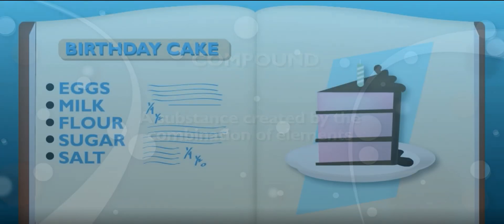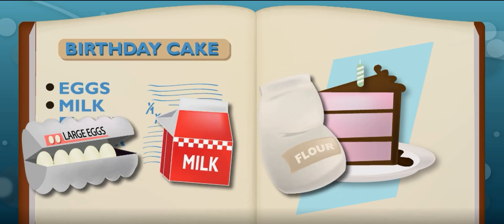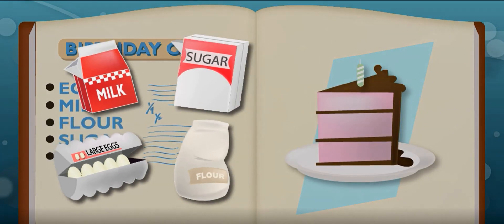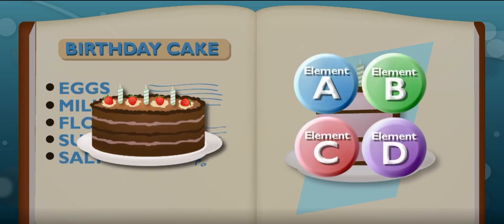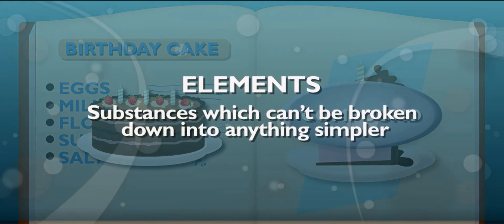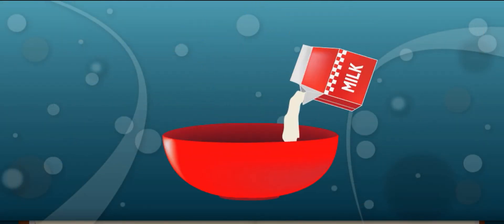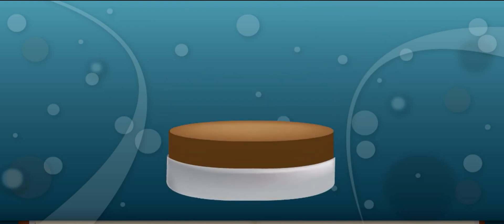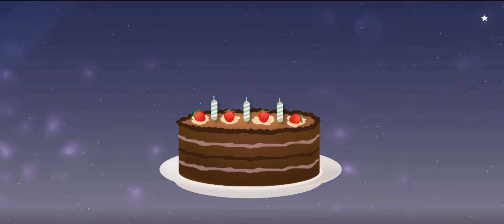That brand new substance is called a compound. It's sort of like this cake — a yummy and delicious treat made of eggs, milk, flour, and sugar. The ingredients we combine to make a cake are like the elements that make up a compound. Elements are substances that cannot be broken down into something simpler. When we combine the ingredients and bake the cake in the oven, a chemical reaction occurs to make a compound — a cake.